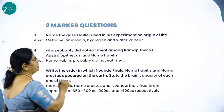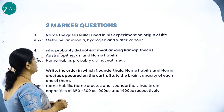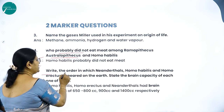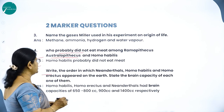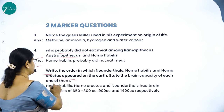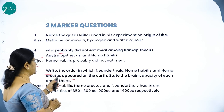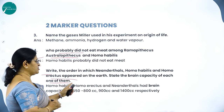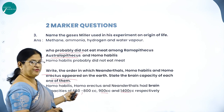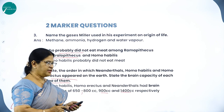Who probably did not eat meat among Ramapithecus, Australopithecus, and Homo habilis? Homo habilis probably did not eat meat. The order in which they appeared on earth: first Homo habilis, then Homo erectus, then Neanderthals, with brain capacities of 650–800 cc, 900 cc, and 1400 cc respectively.